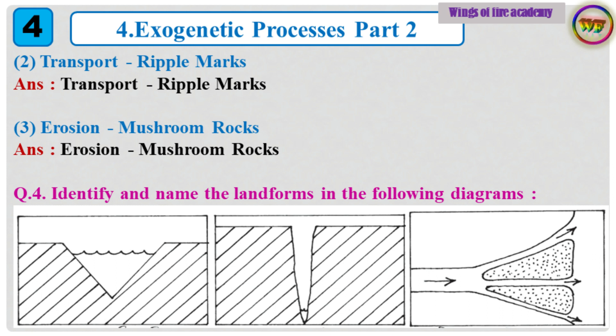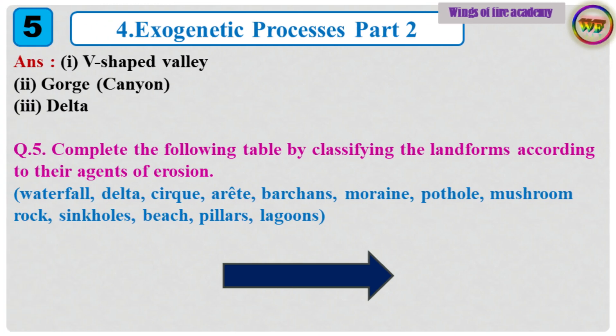Question 4: Identify and name the landforms in the following diagrams. Answer: 1. V-shaped valley. 2. Gorge, Canyon. 3. Delta.